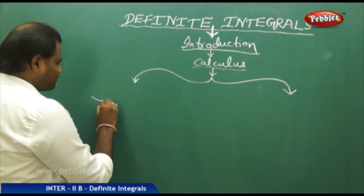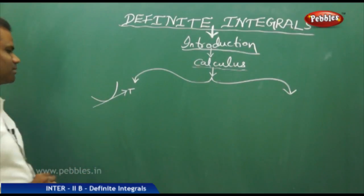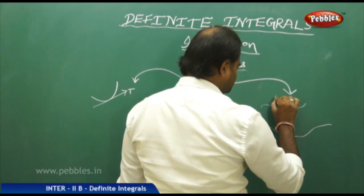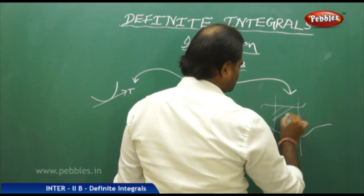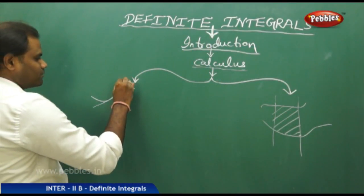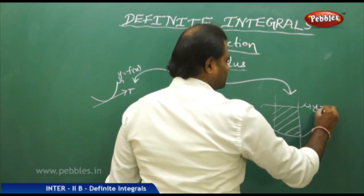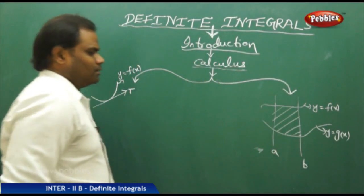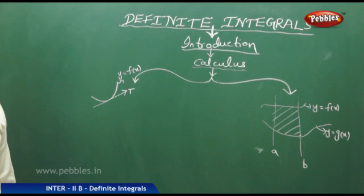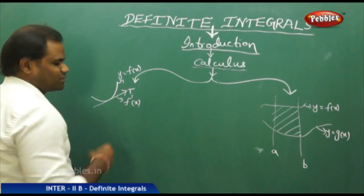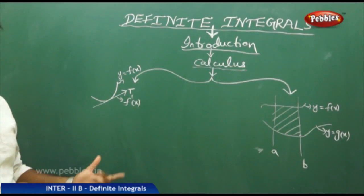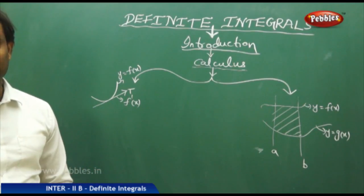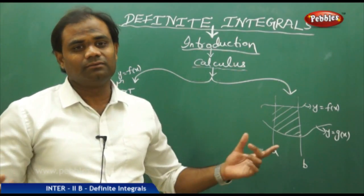One was finding the equation of the tangent of a curve — that is, if I have a curve, finding the equation of tangent for that curve. Differentiation helps in finding the equation of tangent because the slope of the tangent is given by f'(x). This is how differentiation helps, by finding the derivative of the function f(x), and hence differentiation has its significance in finding the equation of tangent to any curve y = f(x).